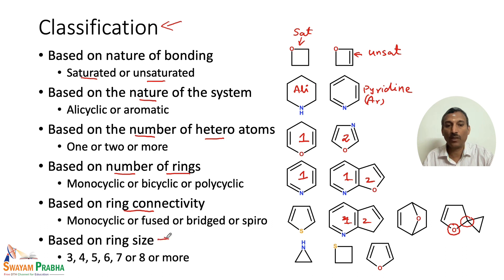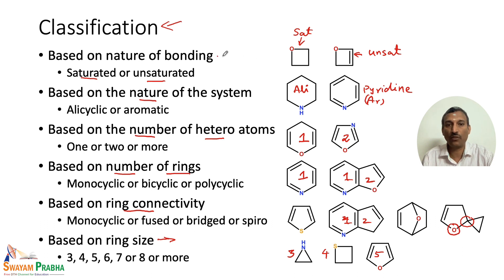We can also classify heterocyclic compounds according to ring size — three-membered, four-membered, five-membered, six-membered, seven-membered, eight-membered rings, and so on. In summary, heterocyclic compounds can be classified based on the nature of bonding, the nature of the system (alicyclic or aromatic), the number of heteroatoms, the number of rings, the ring connectivity, and the ring size.